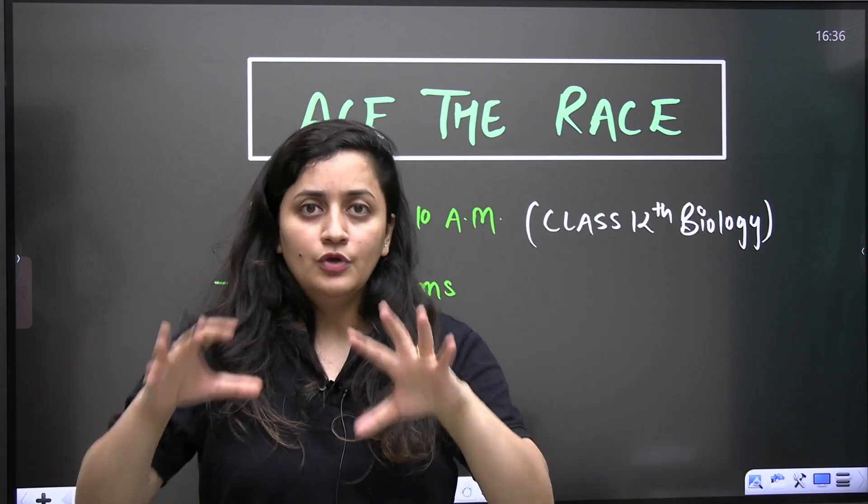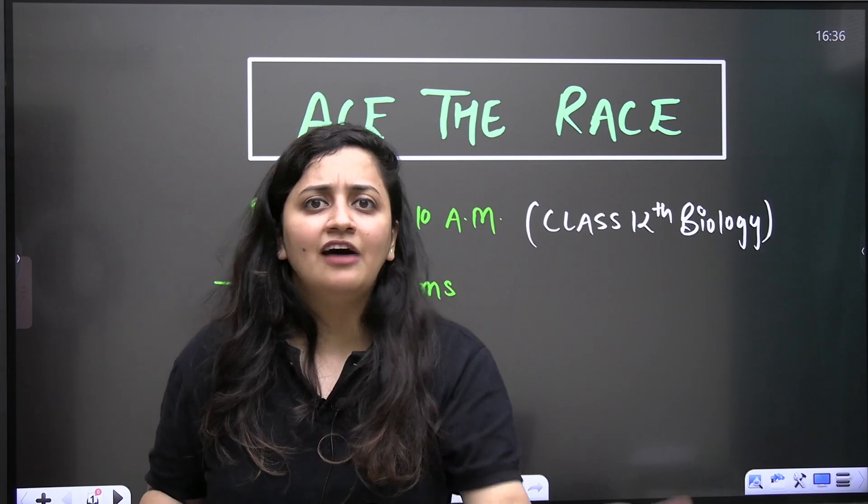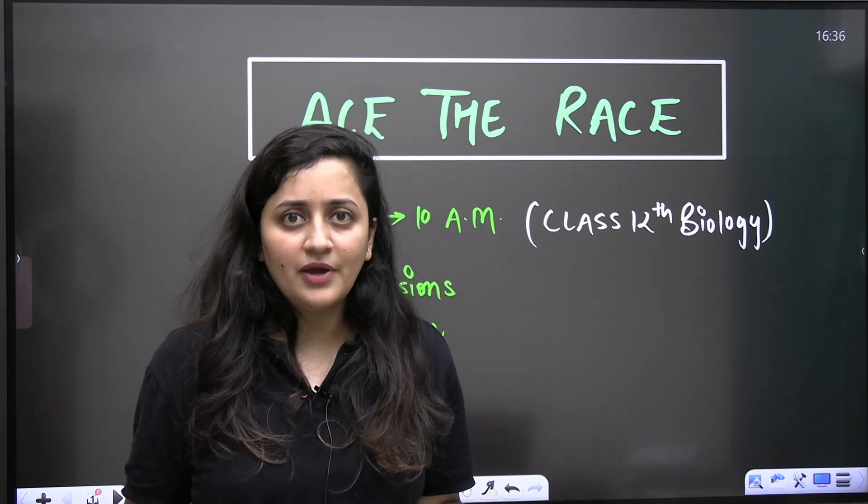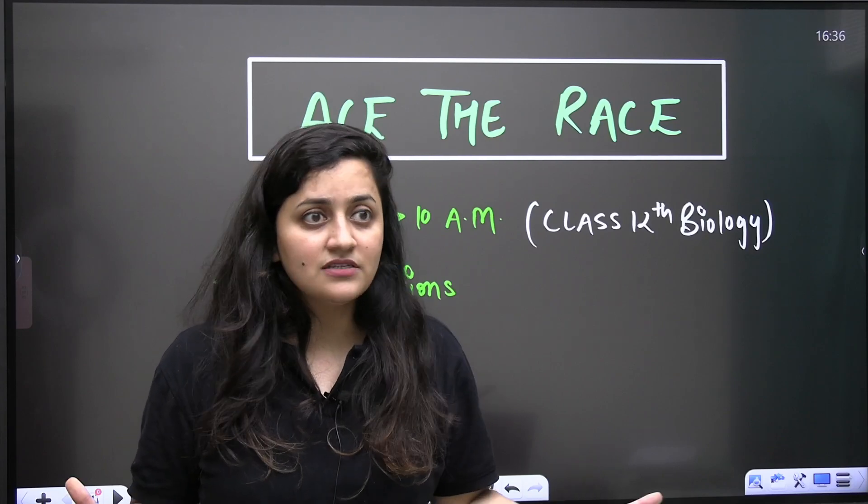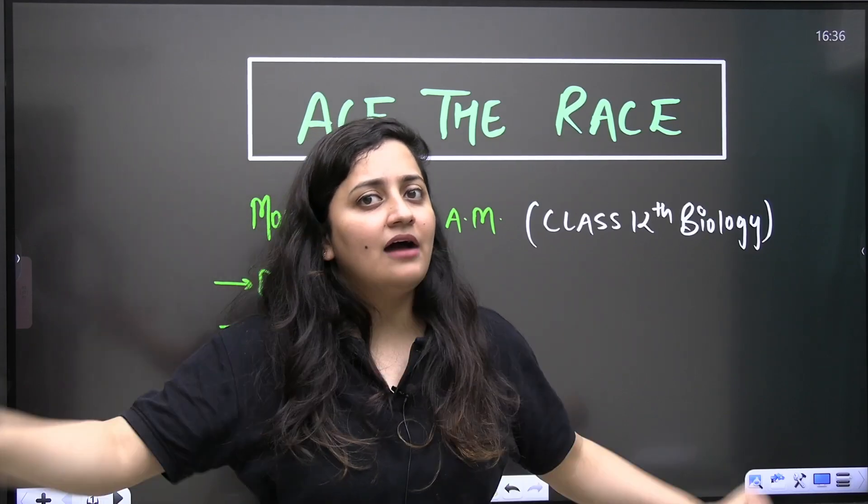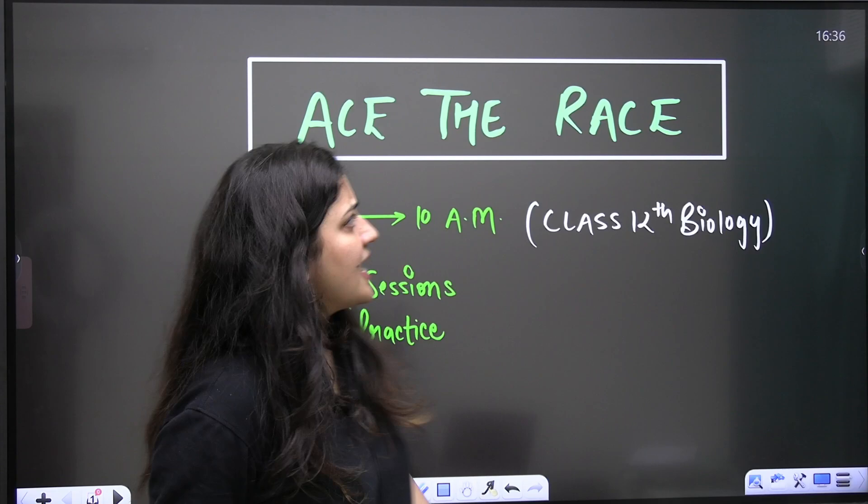90 questions are straight away from the biology. So if we want to get very good marks, we have to ensure that we are getting 360 out of 360 marks in the biology. This is what we need. So we have decided one thing for you. And that is ACE the Race.